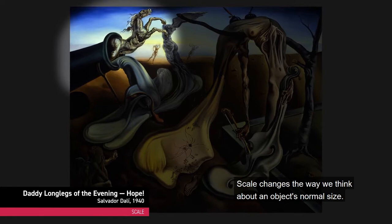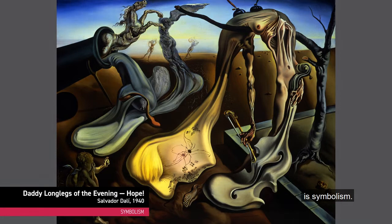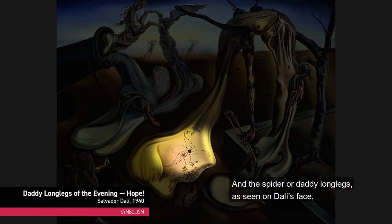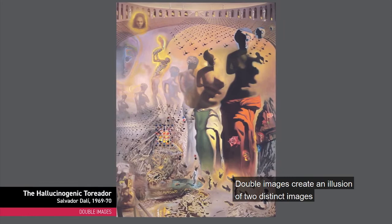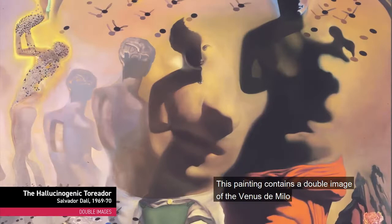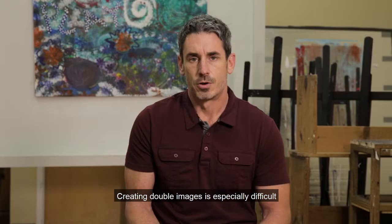Another technique found in surrealist painting is symbolism. The face is a symbol for Dali. The cannon symbolizes war. And the spider, or daddy long legs, as seen on Dali's face, is a French symbol of hope. Double images create an illusion of two distinct images that can be seen within the same configuration, perhaps adding hidden meaning. This painting contains a double image of the Venus de Milo and a Spanish bullfighter. Creating double images is especially difficult, and just one of Salvador Dali's surrealist trademarks.